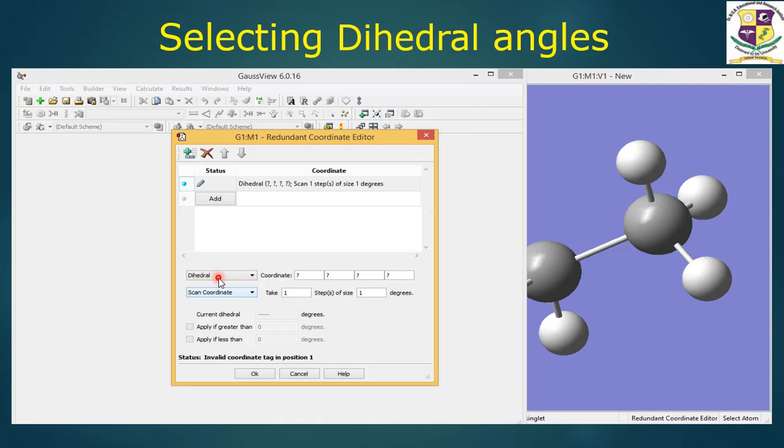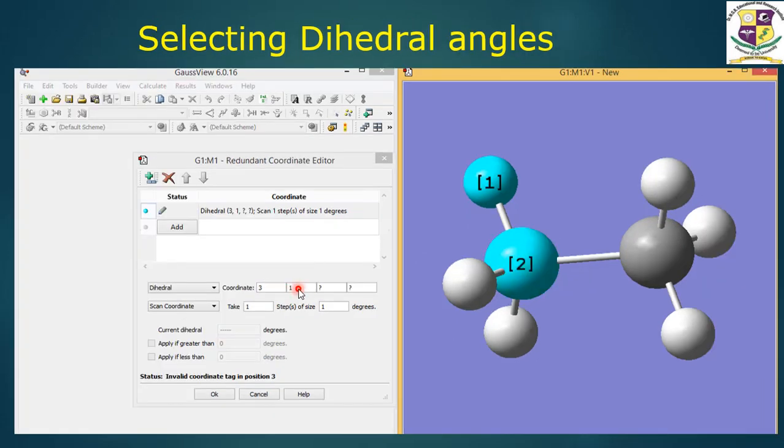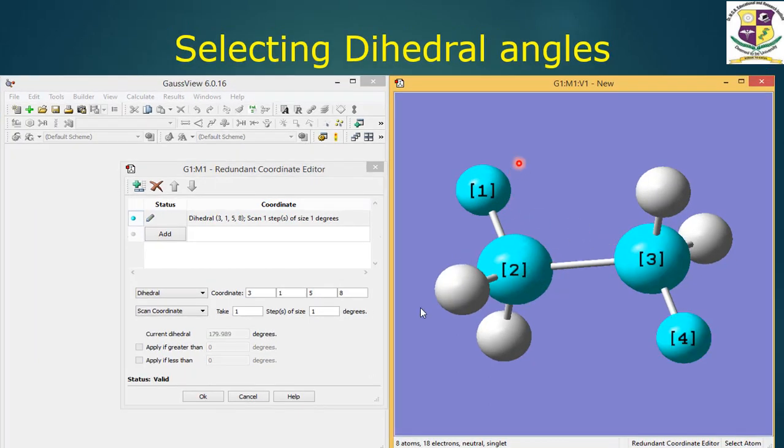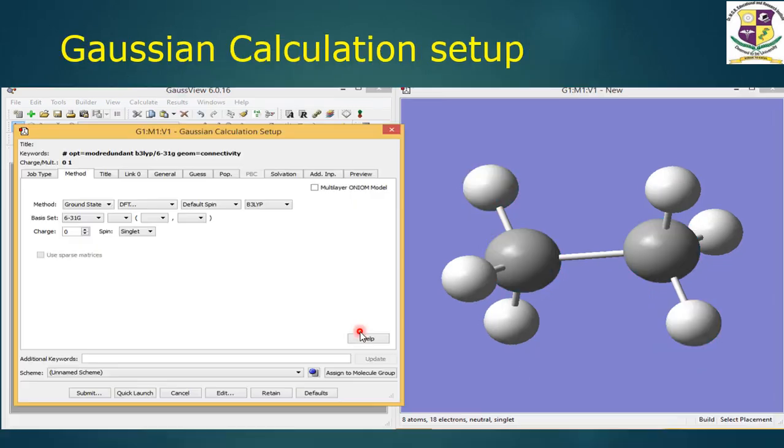In this button you add dihedral and scan coordinate. Next we will edit this redundant coordinates - click the coordinate and click your atom. Select all the coordinates one by one and the atoms. Now all the four coordinates are selected and the atoms have been selected. In this scan coordinate we have to select how many steps to take and how many degrees which you want to rotate the molecule. I have just given here 5 steps to be taken and 60 degrees it has to rotate.